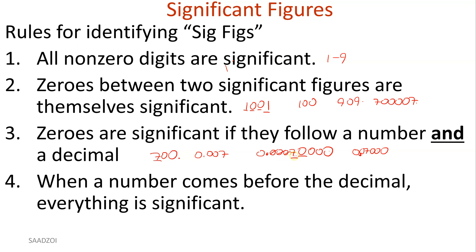Now our last scenario: when a number comes before a decimal, everything is significant. So going back to the 700 example — what if we did 700. with a decimal point written? Guess what? Everything you're seeing is significant, because the number is in front of the decimal. So here I have six significant numbers. I could do another example and have seven significant numbers. That's how that works, and that's how you determine significant numbers.